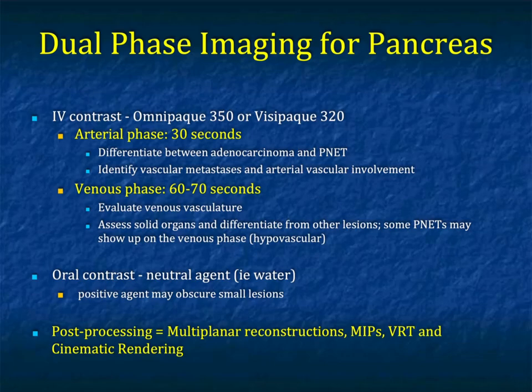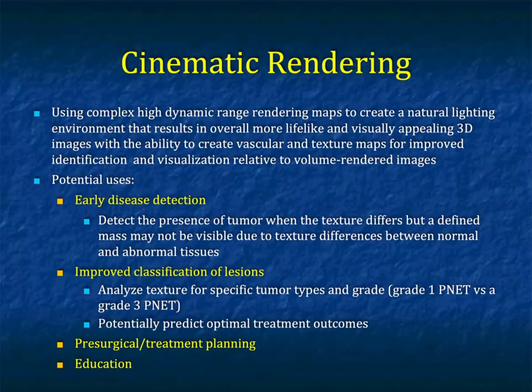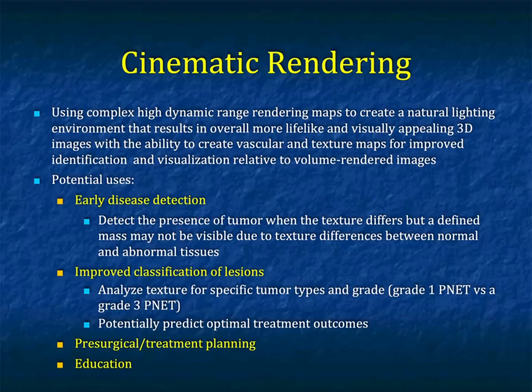For MIP imaging, anything that's very vascular benefits greatly. In terms of cinematic rendering, it creates a very natural model. When you compare the vascularity of the pancreas and these tumors, it really makes them show very nicely. I have found at times it's easy to pick up neuroendocrine tumors with cinematic rendering that you might miss with routine imaging if you're not very careful.